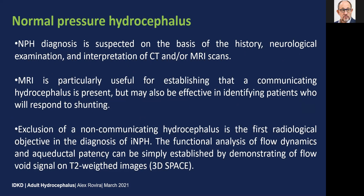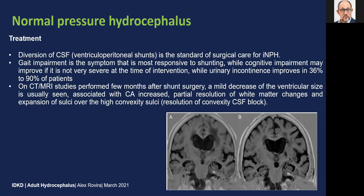Normal pressure hydrocephalus diagnosis is suspected on the basis of the history, neurological examination, and interpretation of CT and MRI scans. MRI is particularly useful for establishing that a communicating hydrocephalus is present, but may also be effective in identifying patients who will respond to shunting. Exclusion of non-communicating hydrocephalus is the first radiological objective. The functional analysis of flow dynamics and aqueductal patency can be simply established by demonstrating a flow void signal on T2-weighted images. Diversion of CSF with a ventriculoperitoneal shunt is the standard of surgical care for these patients.